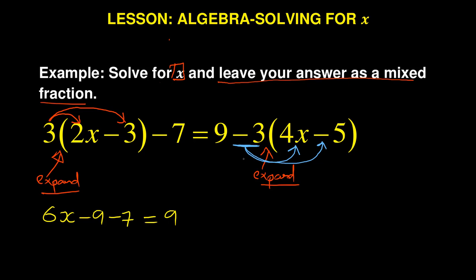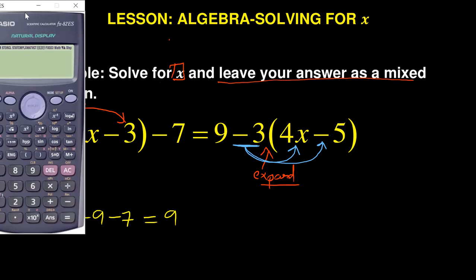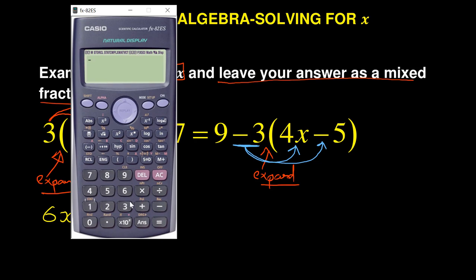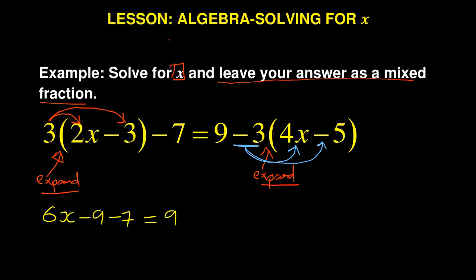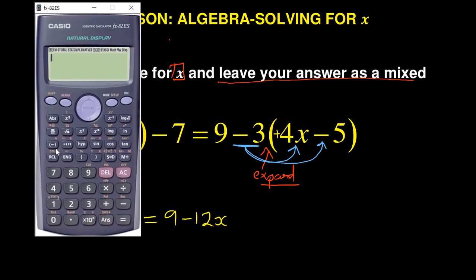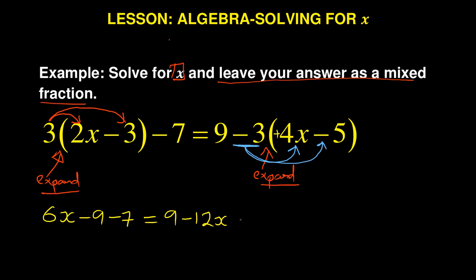Now we are expanding minus 3 times 4x. Rely on your calculator. Minus 3 times 4, which is negative 12. Because there is a positive sign there, so the negative is powerful, which is negative 12. And then the next one is minus 3 times minus 5. I'm getting in this case 15, which is positive.